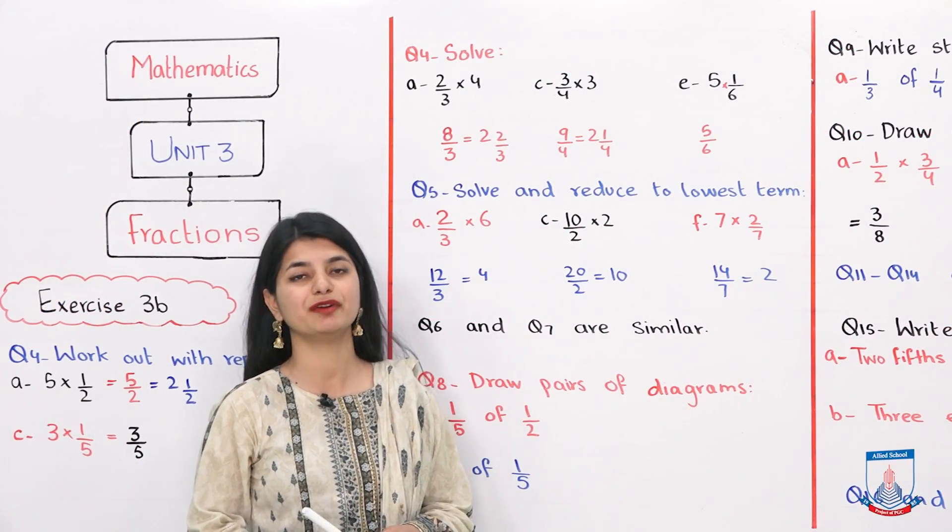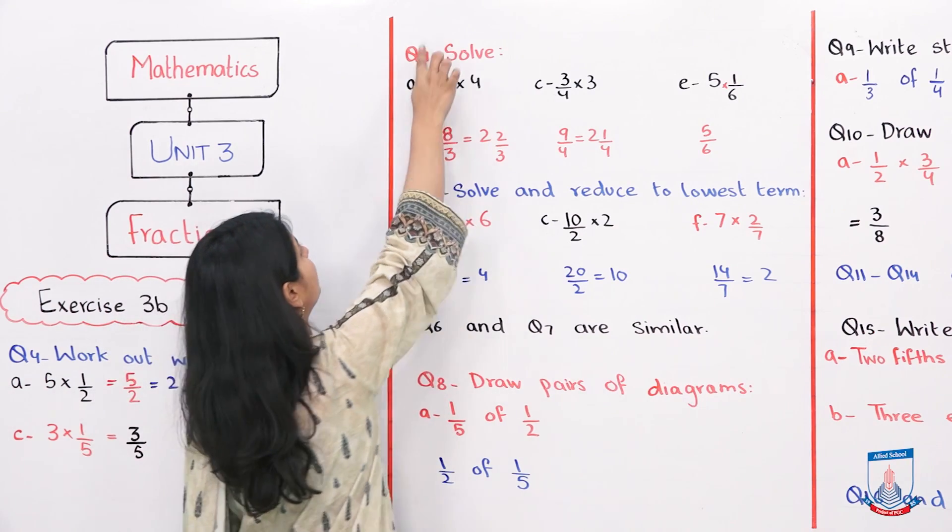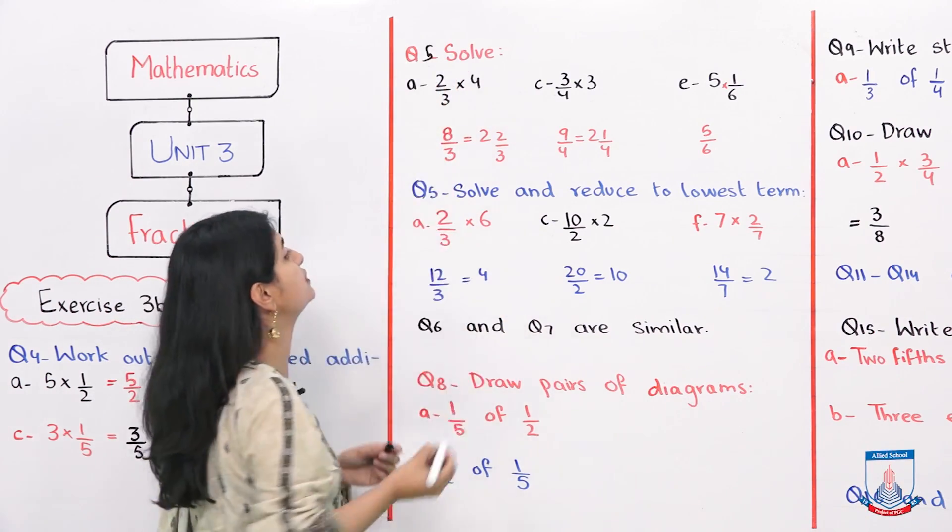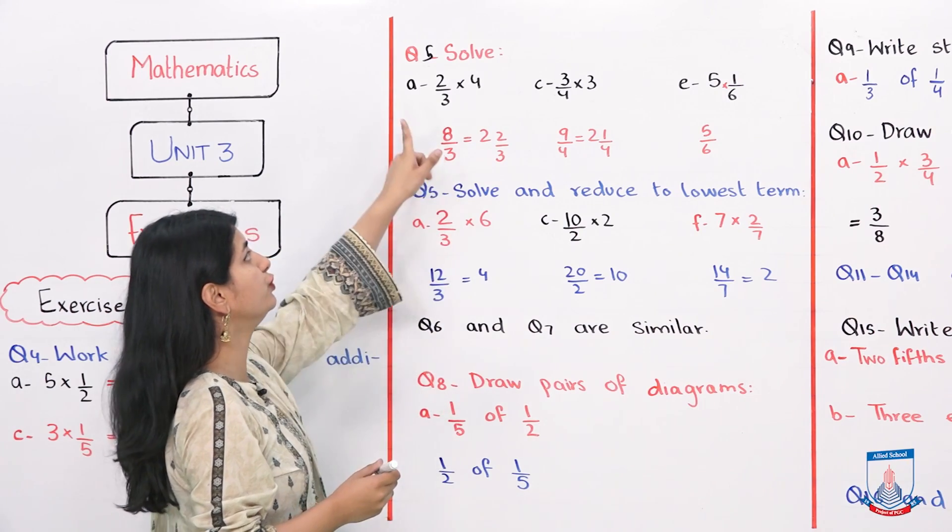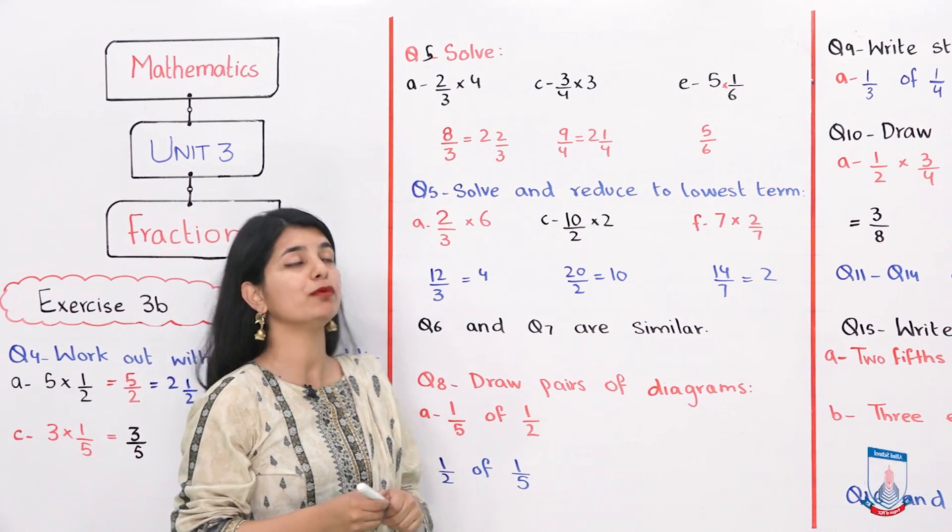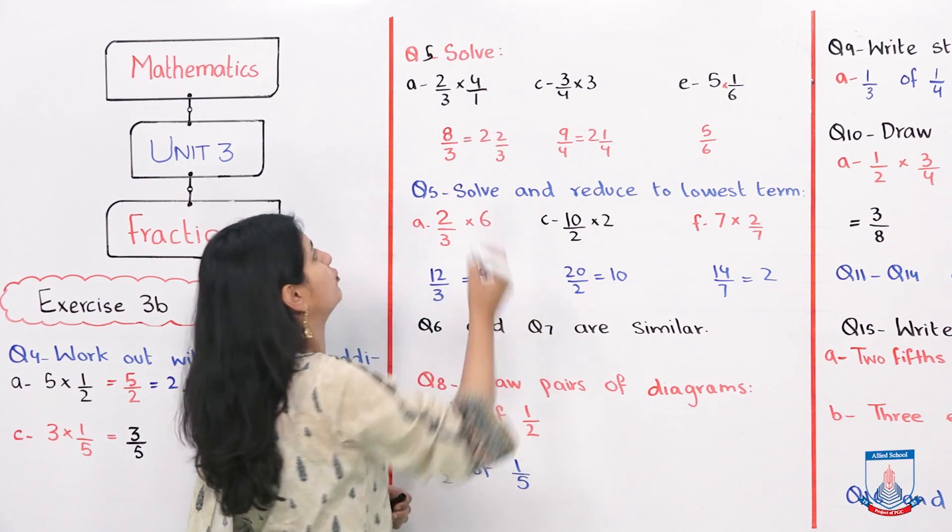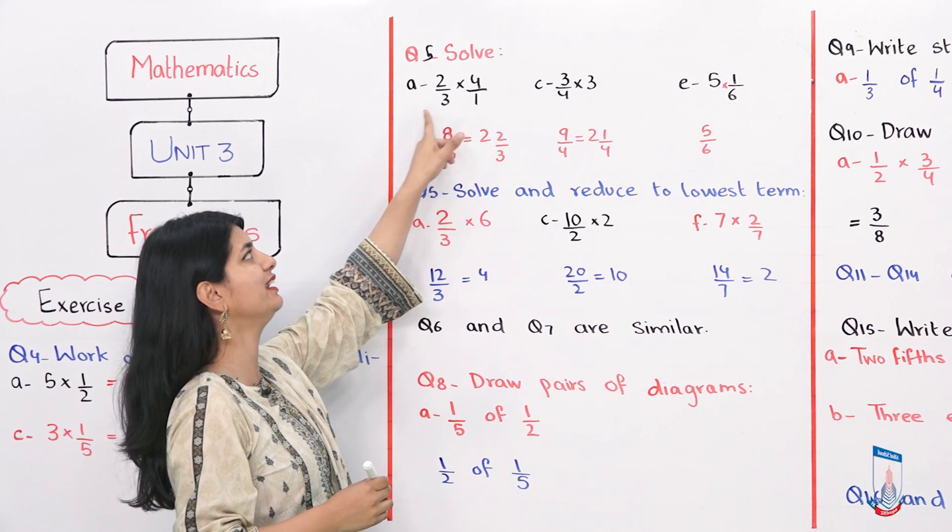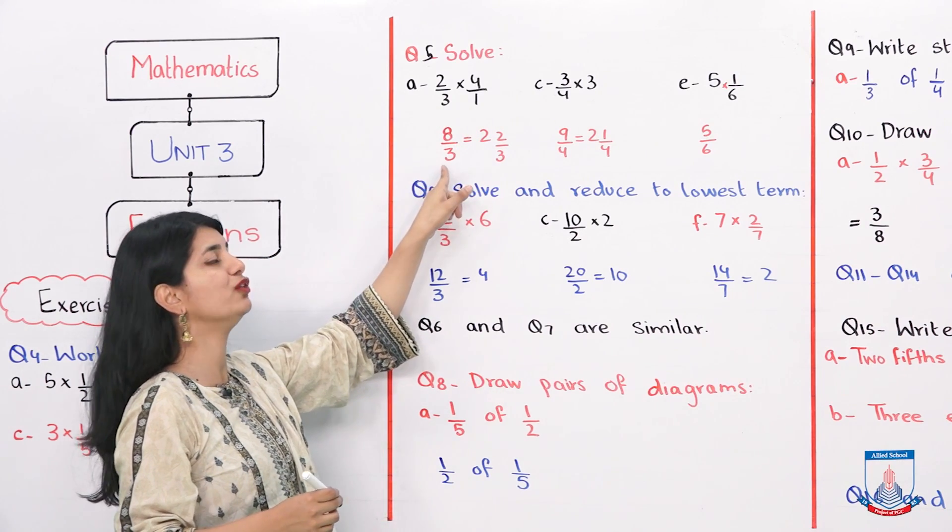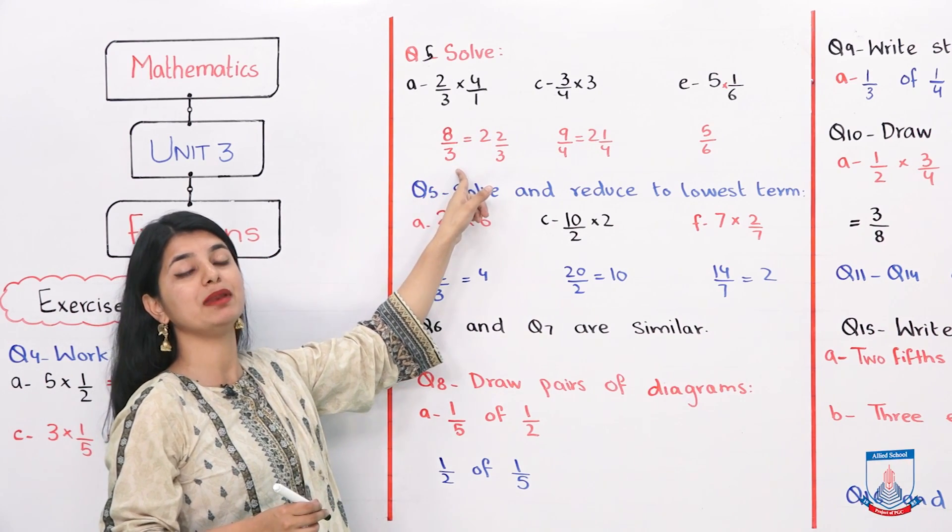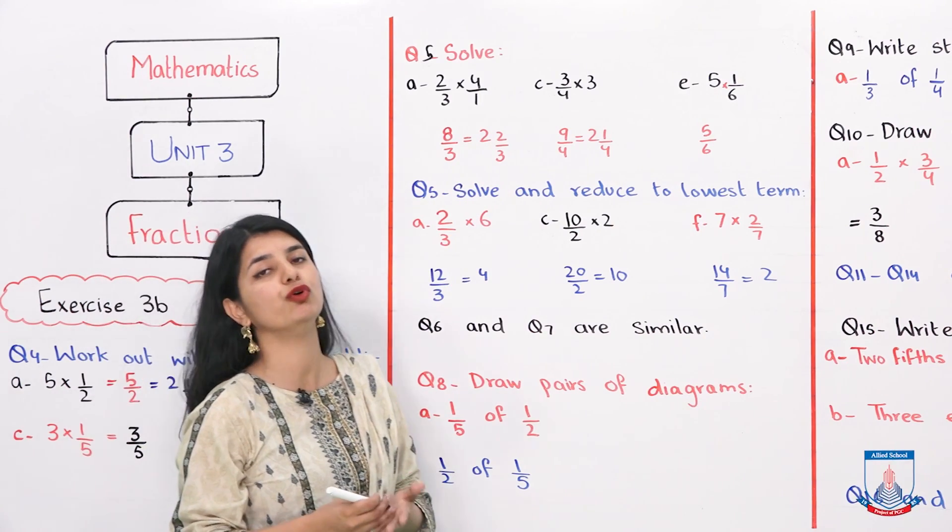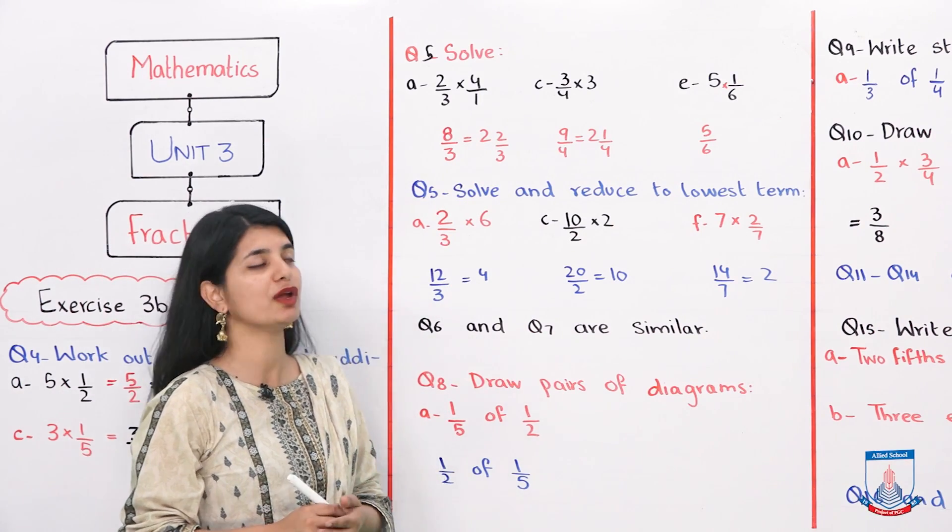Now let's look at question number 5. Question 5 is part a. You have to solve 2 over 3 into 4. When you have to solve this problem, you consider 1 and multiply 2 into 4 is 8 and 3 into 1 is 3. 8 over 3. If you convert this in mixed fractions and divide it, you will get 2 whole 2 by 3. And then you can write that.